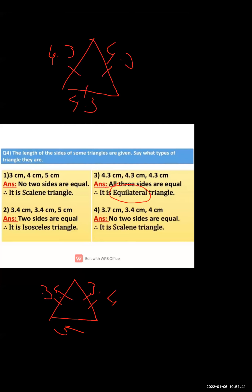Fourth: 3.7 cm, 3.4 cm, and 4 cm — no sides are equal, so it is a scalene triangle.